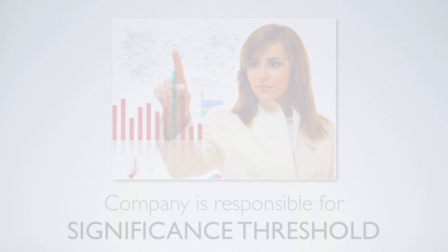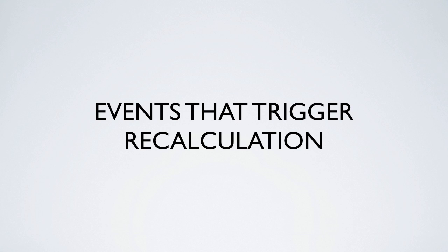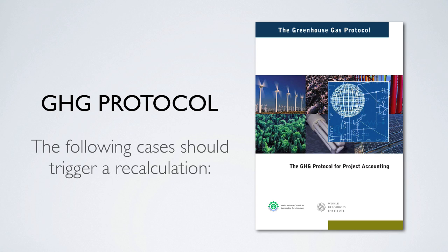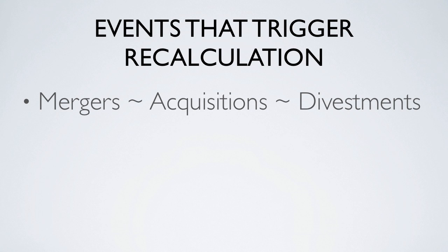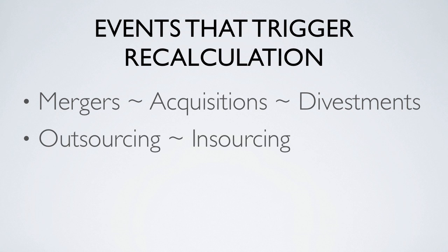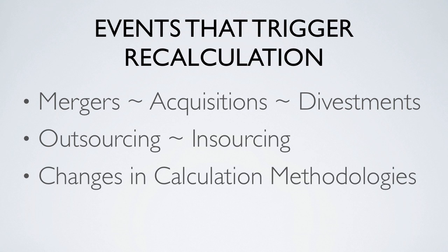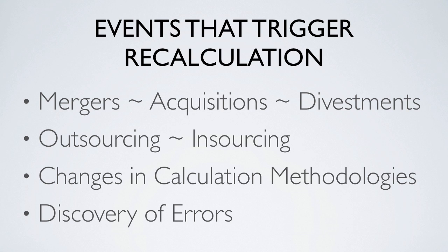Events that can trigger recalculation. According to the Greenhouse Gas Protocol, the following cases should trigger a recalculation: structural changes such as mergers, acquisitions, and divestments, or the outsourcing and insourcing of greenhouse gas emitting activities; changes in calculation methodologies or improvements in the accuracy of emissions factors or activity data; and the discovery of significant errors, or a number of errors that are cumulatively significant.